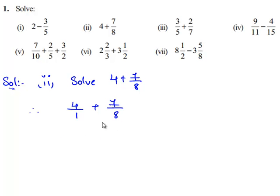We need to find the LCM for the denominators 1 and 8. Since 1 and 8 do not have any other common factor besides 1, the LCM of 1 and 8 equals 1 times 8, which is 8.